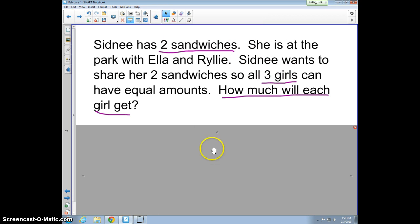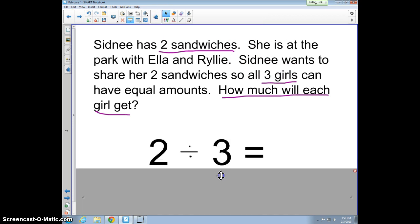So what that's going to look like as a math expression is we have two sandwiches, we divide it evenly with the three girls. So we take two, divide it by three, and then that's going to give us our quotient, which will be the amount of sandwiches that each girl gets.